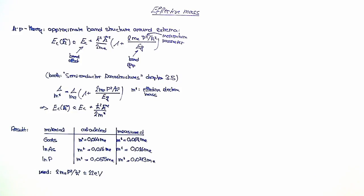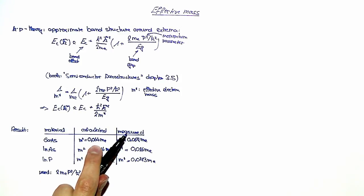So in this table, you can see the results for the materials gallium arsenide, indium arsenide and indium phosphide. In the second column there, the calculated values, where for all the materials we use that this expression here is equal to 22 electron volts. In the third column, you can see the measured values, which are in reasonable agreement with the calculated values.